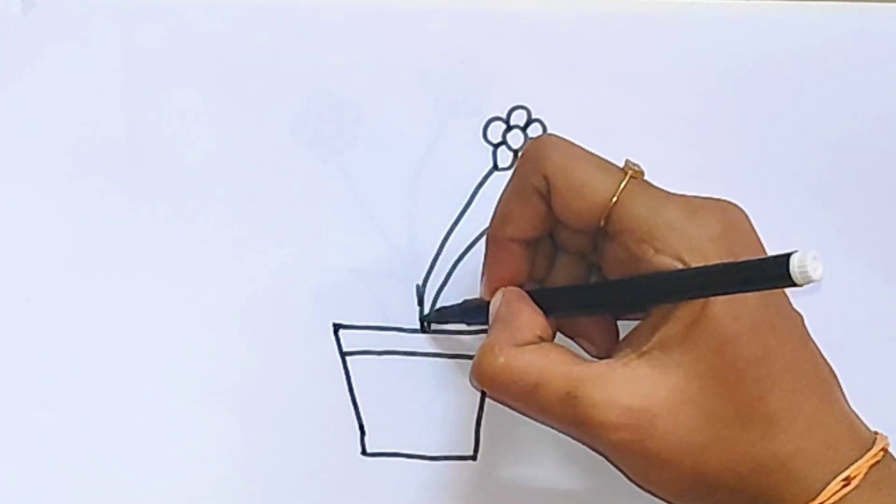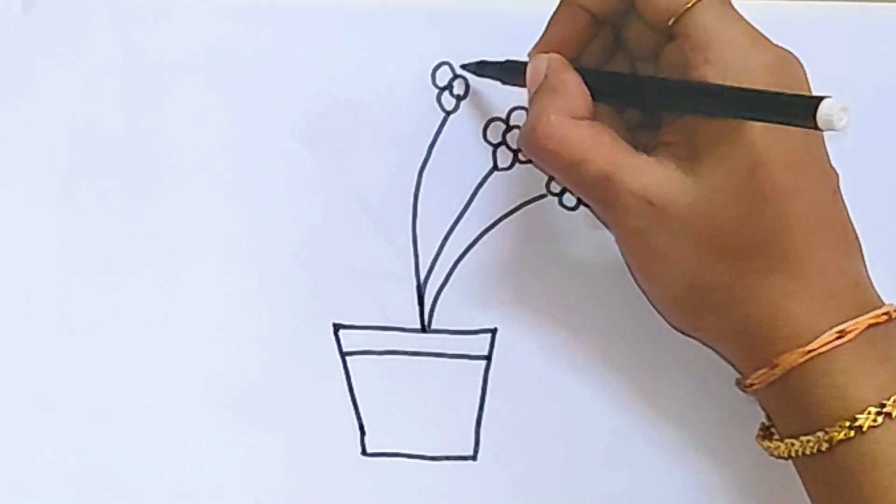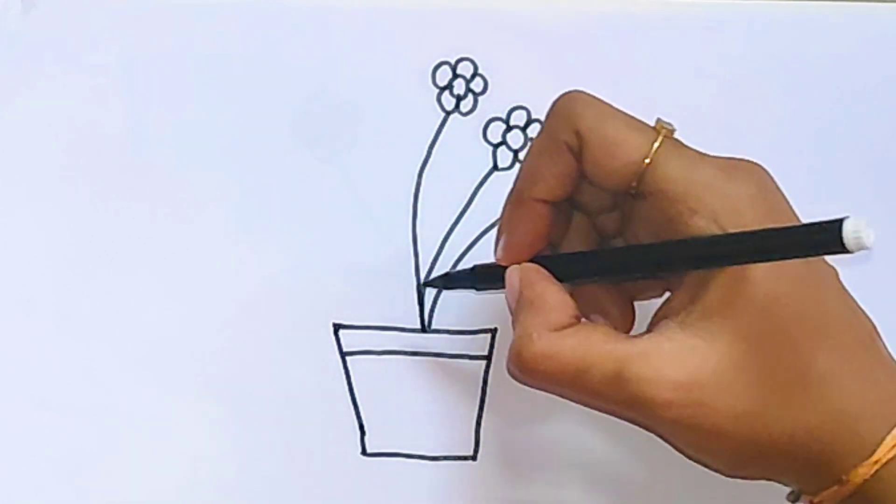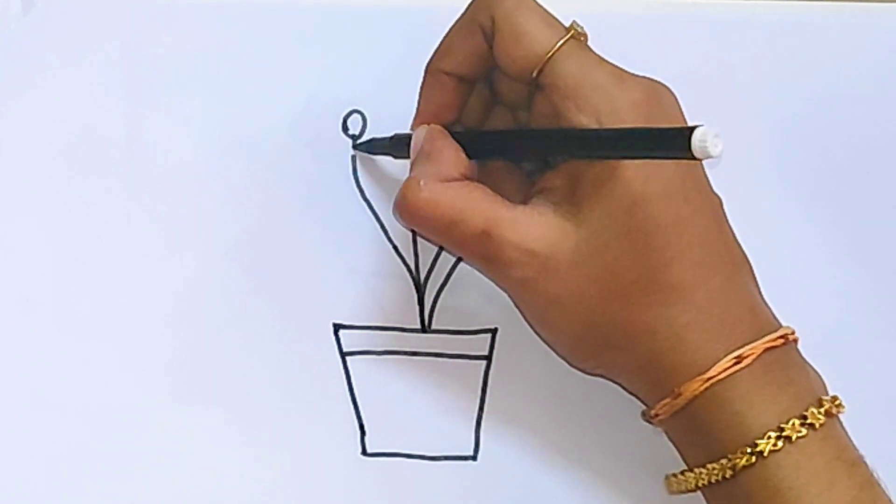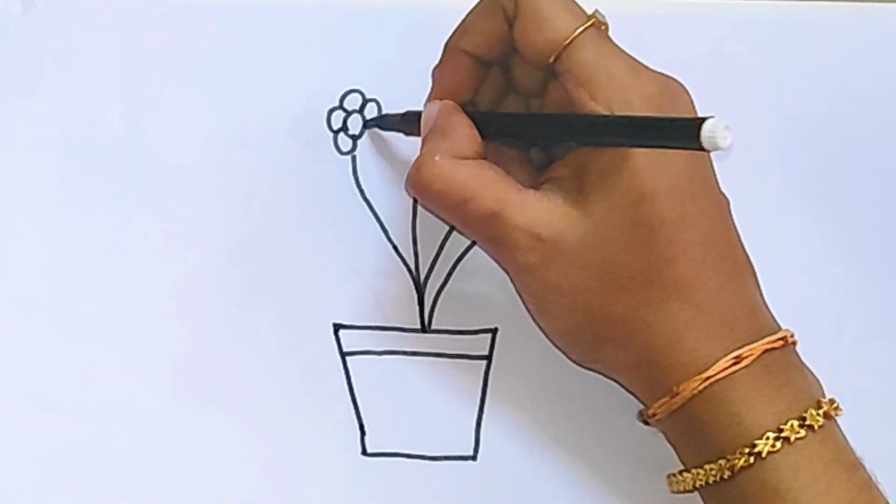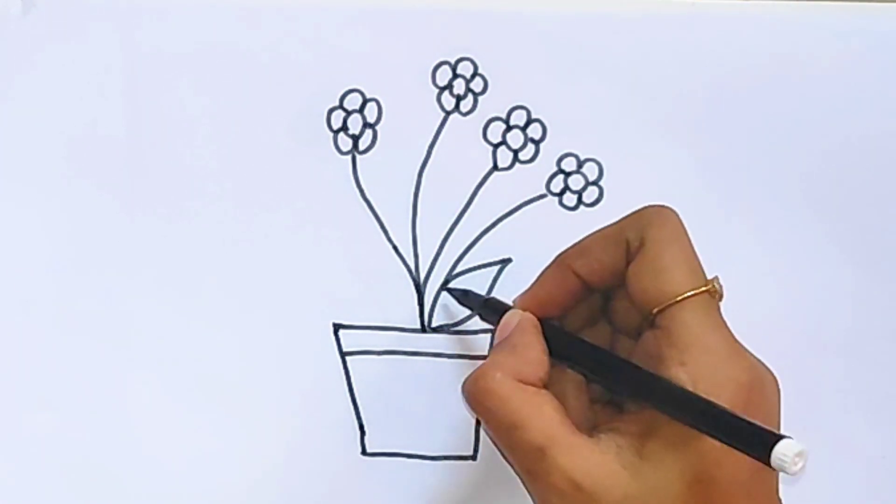Now the third flower. Let's draw one more flower. Great! Now let's draw the leaves.